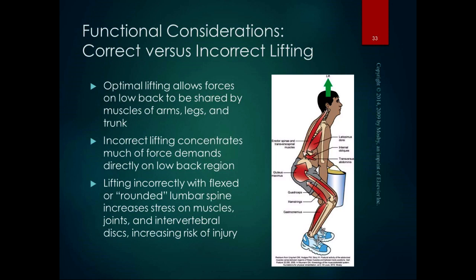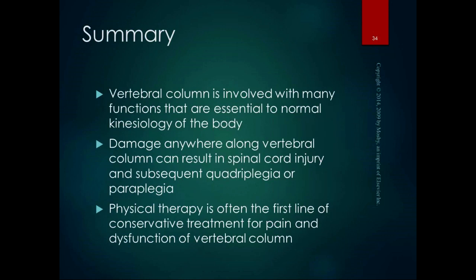In an outpatient clinic, particularly in return-to-work or functional capacity evaluations, we teach correct versus incorrect lifting. Optimal lifting techniques allow forces to be shared between the low back and the muscles of the arms, legs, and trunk. Incorrect lifting — with a flexed or rounded lumbar spine — concentrates force demands on the low back, increasing stress on muscles, joints, and intervertebral discs and increasing injury risk. The key is to maintain lumbar lordosis when lifting — or, as a memorable cue: stick your butt out when you lift.